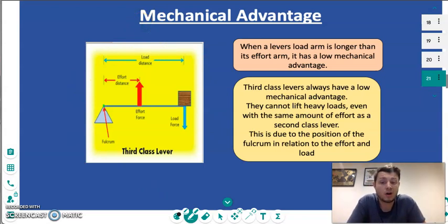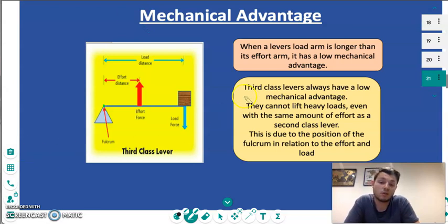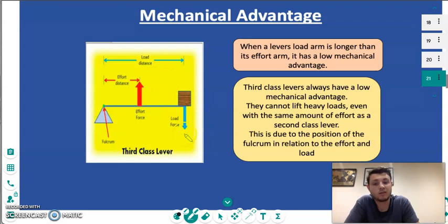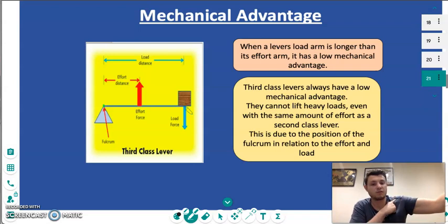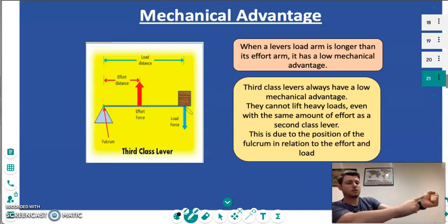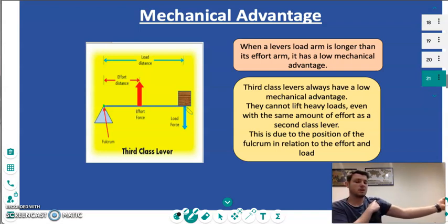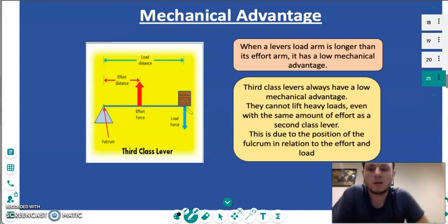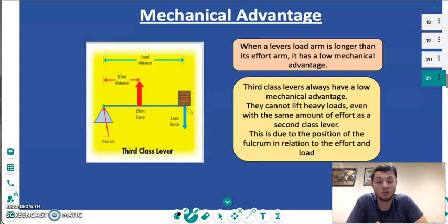A bicep curl is a hard exercise to perform with heavy weight compared to a squat or a calf raise, and this is simply because when we perform a bicep curl it is a third class lever. The load — which is the weight — is always longer, with the effort in the middle being the bicep, and the fulcrum at the elbow. The load is the weight, the effort is the bicep, and the fulcrum is the elbow, which in turn always means we have a low mechanical advantage for that lever.